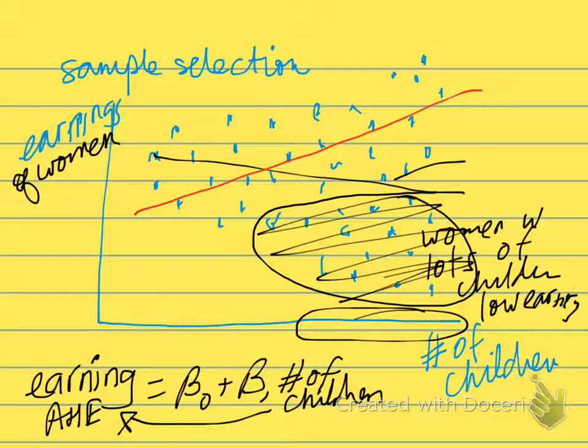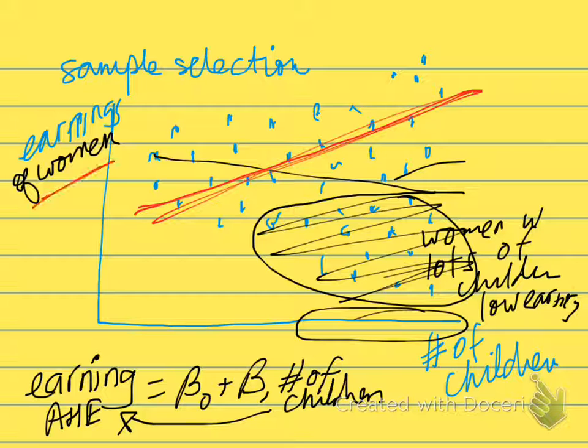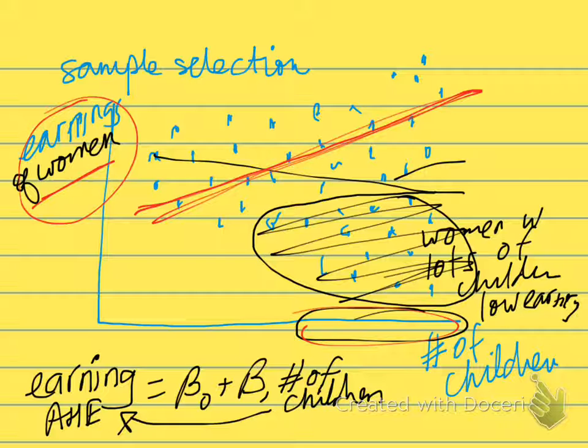That's the best fit data. So we go from having a negative or flat slope to having a positive slope in the case where our sample has been selected to not include women whose earnings are low, given that they have large numbers of children. So remember the key feature for there to be bias in sample selection is that the sample itself has to be selected based on the outcome variable controlling for the explanatory variable.